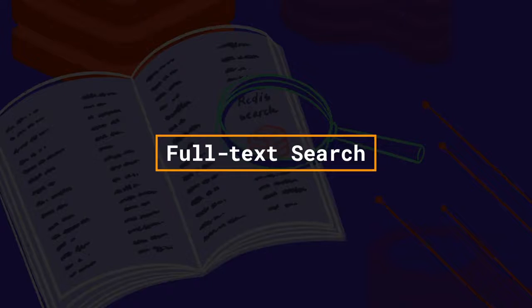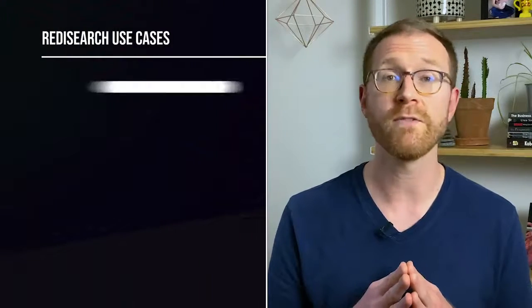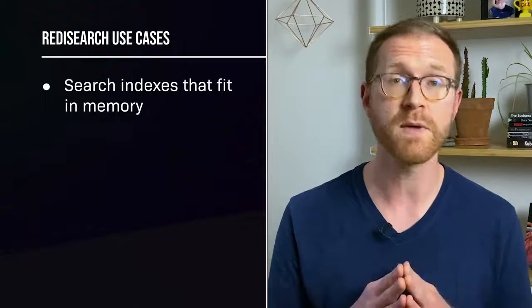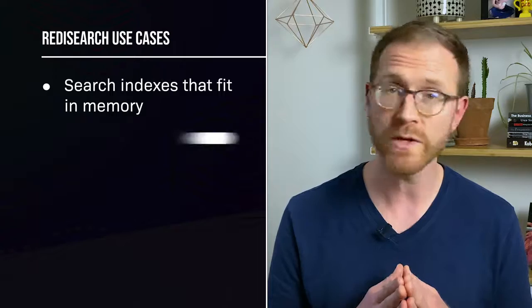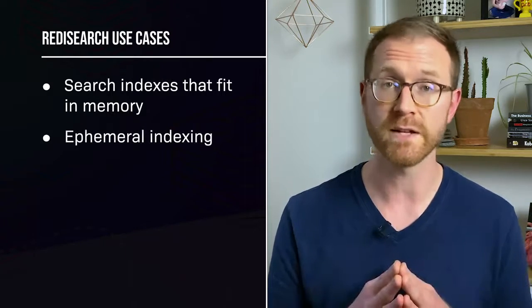Redis Search is a powerful indexing and dynamic query engine for Redis. But as the name implies, it's also a search engine. You get robust search features on par with other dedicated search engines, and your searches are extremely fast because the entire search index is stored in memory. This makes Redis Search great for applications that can fit their indexes in memory. It's also useful for cases where you need to create and destroy a lot of indexes frequently — what we call ephemeral indexing. But because the data is stored in memory, Redis Search probably isn't the right fit if you measure your search index in petabytes.